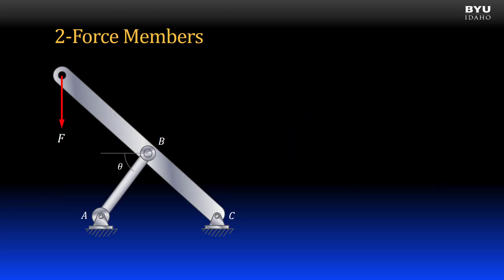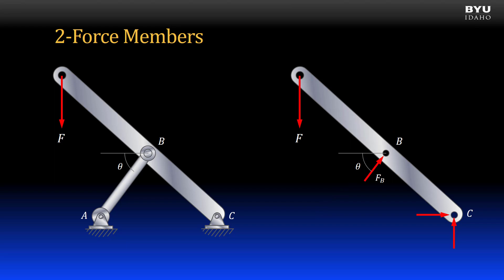Here's an example of how recognizing a two-force member can ease analysis. Suppose we want to find the support reaction forces for the structure. Member AB is a two-force member, and the line of action for both forces passes through points A and B. Therefore, I can draw a free body diagram of the other member with a single resultant force at the pin support at point B, acting in the angle theta.